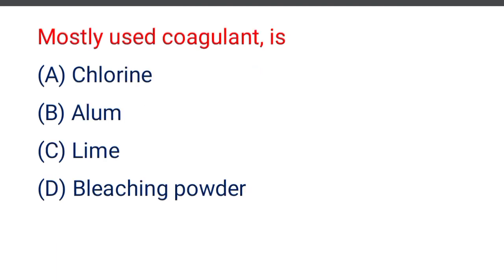Next question: the mostly used coagulant is — option A chlorine, option B alum, option C lime, option D bleaching powder. The correct answer is option B, alum.